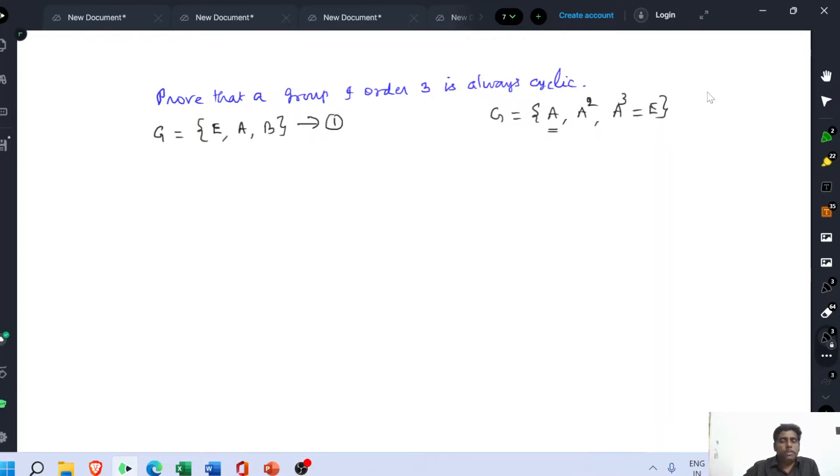To prove the cyclic nature of this given group, multiply all the elements of this group by A. Then G equal to A into E, A square, AB. A into E is our A, then A square, AB. The product elements A, A square, AB are also an element of the group, that is the actual group.